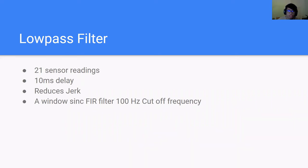To reduce the jerk from tiny noise induced adjustments, we implemented a low-pass filter on the last 21 sensor readings. This adds a 10 millisecond delay, but greatly reduced jerk. After some experimentation, we settled on a windowed sinc FIR filter with a 100Hz cutoff frequency.